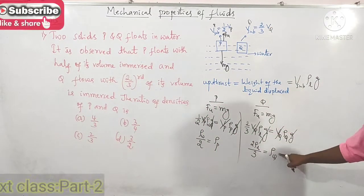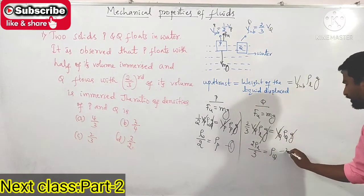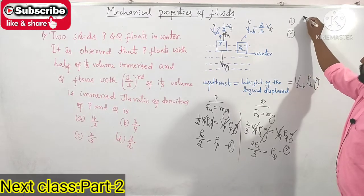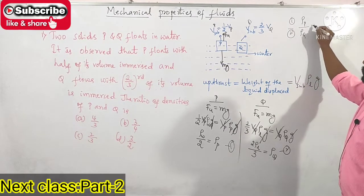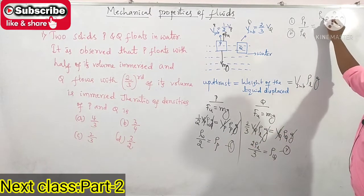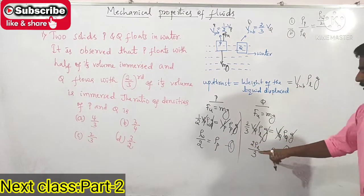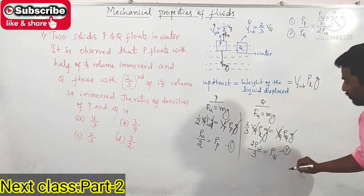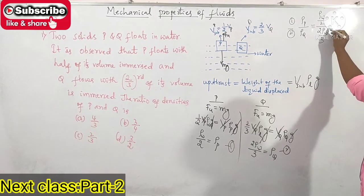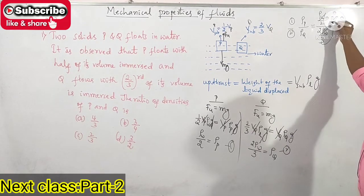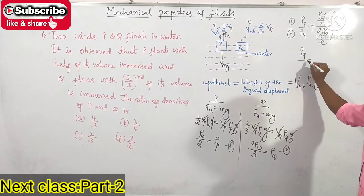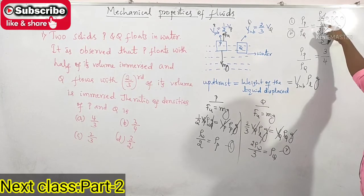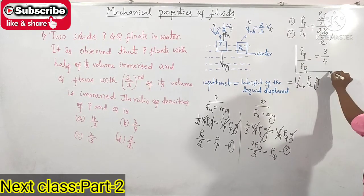Now, density of P divided by density of Q equals (density of water / 2) divided by (2 times density of water / 3). Density of water cancels out, giving (1/2) divided by (2/3) = (1/2) times (3/2) = 3/4. So the ratio of densities of P to Q is 3 to 4.